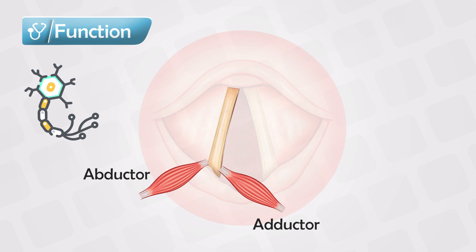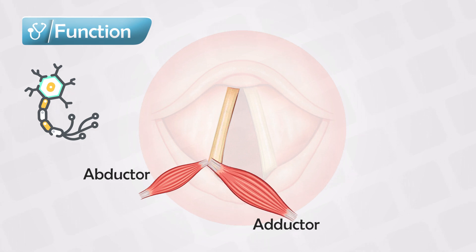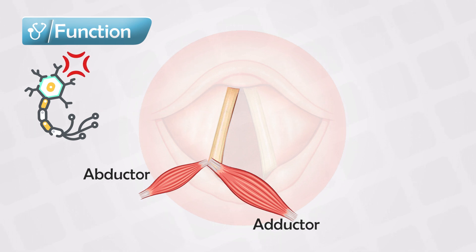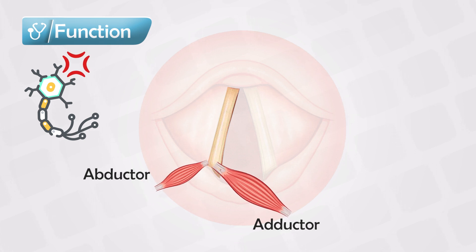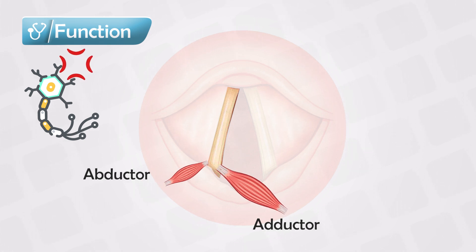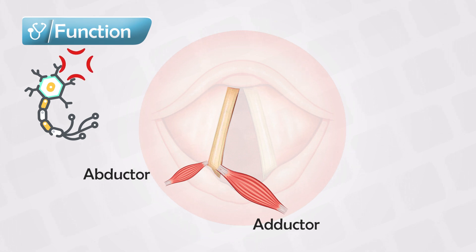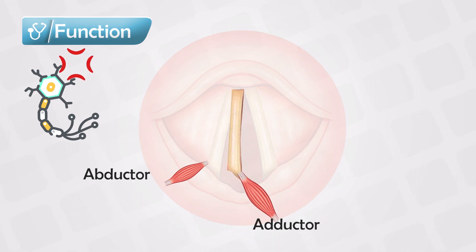The adductor muscle has more innervation than the abductor muscle. So if the recurrent laryngeal nerve is damaged — but not fully severed — it will have a weaker signal going to the vocal cords. Both the adductor and the abductor will have weaker signals commanding them to contract, but because the adductor has more innervation, it will contract more.